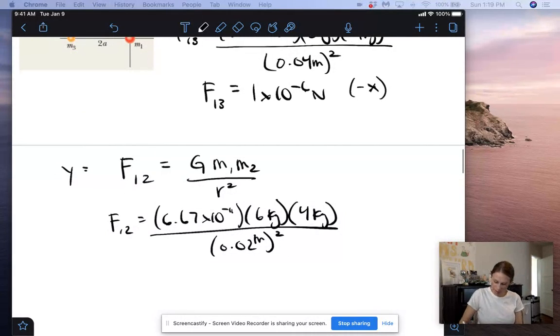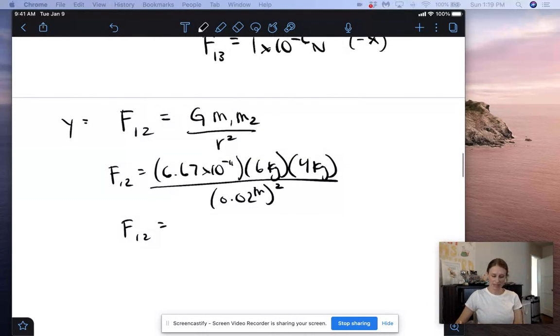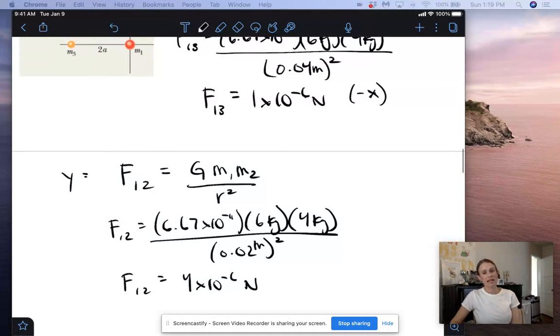My M got a little wonky there, my bad. So we have 6.67 times 10 to the negative 11th times 6 times 4, and then I'm going to divide that by 0.02 squared. And we get 4.002 times 10 to the negative 6, so that's about 4 times 10 to the negative 6 newtons. And so we can see that that is about 4 times bigger because the distance is halved.